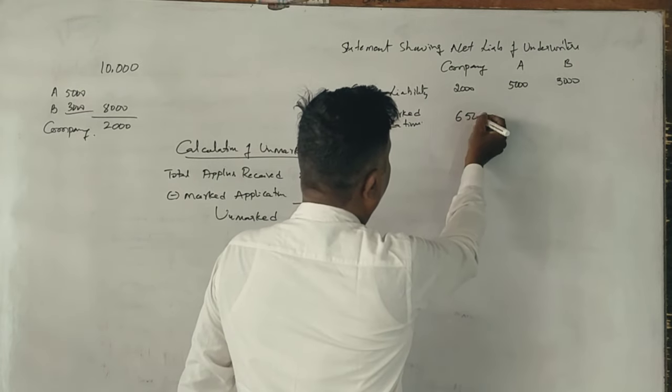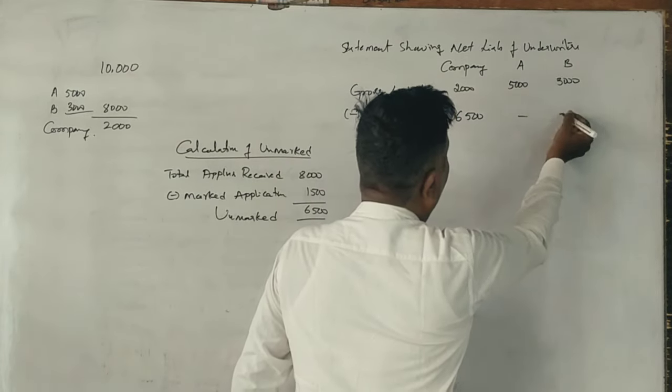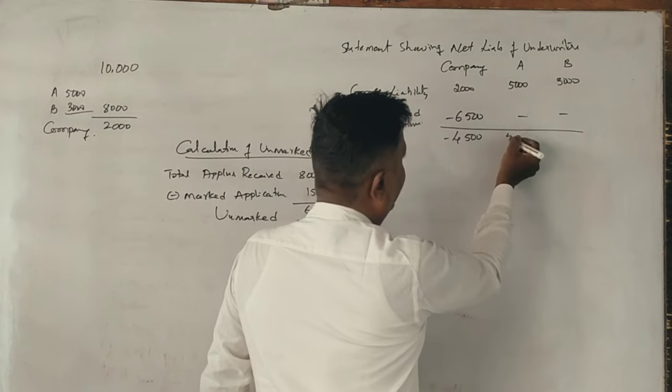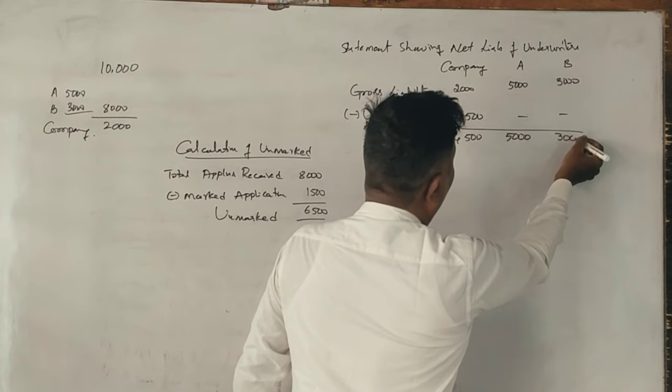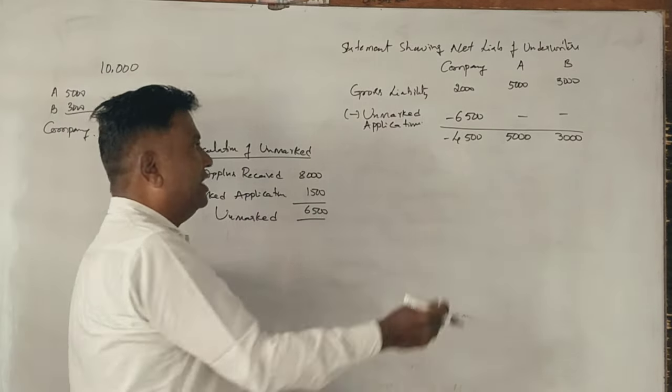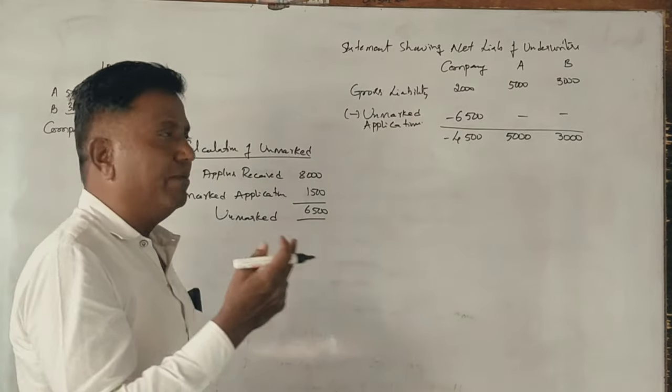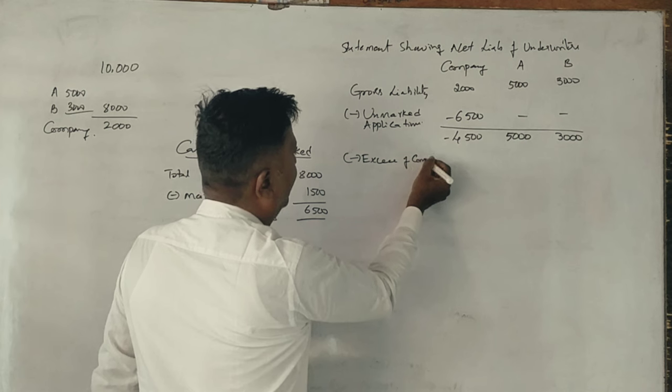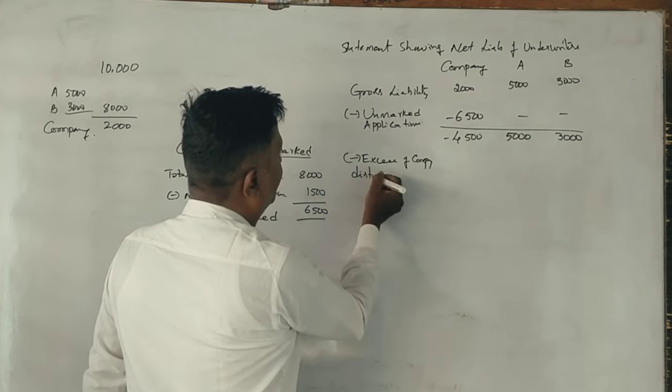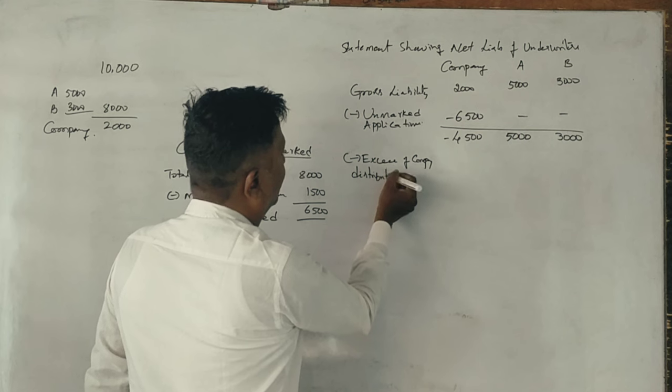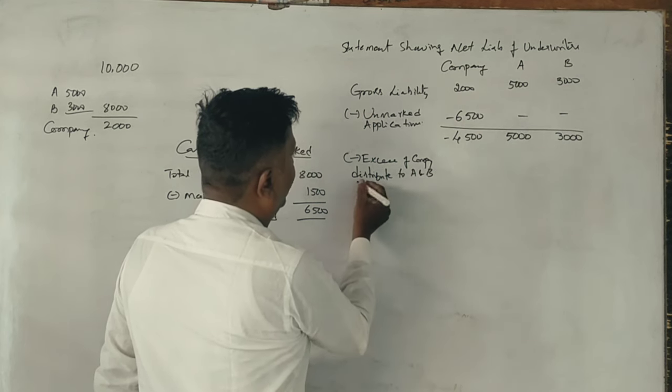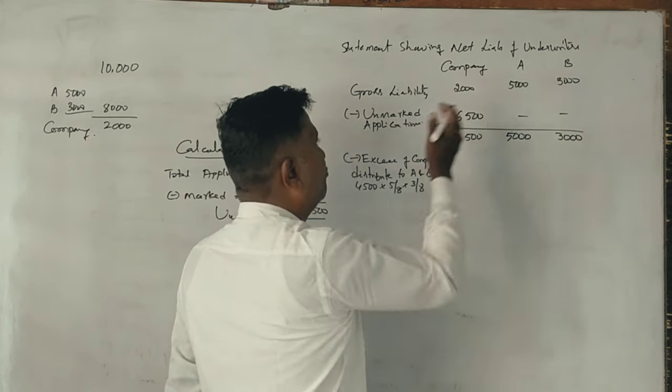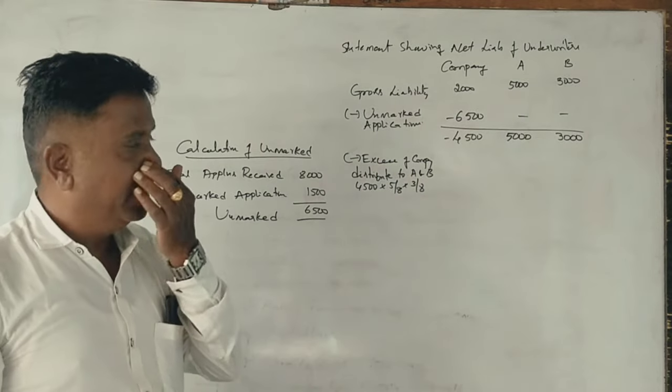The company has 6,500 unmarked shares. The excess 4,500 shares are distributed to A and B in ratio 5:3. 5 plus 3 equals 8.